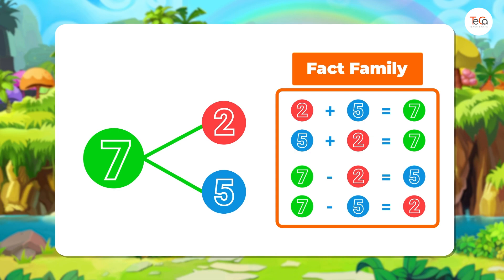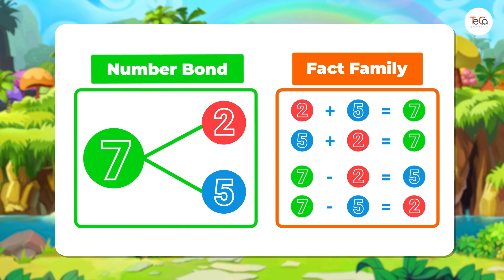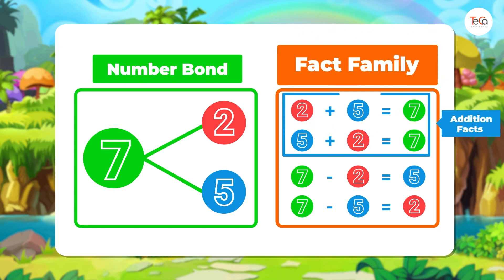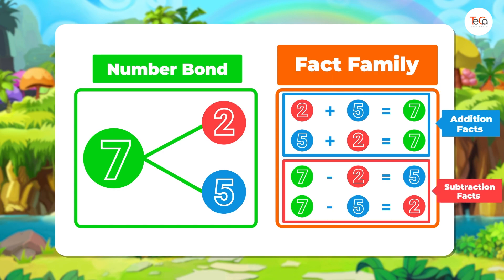So, you see, having this number bond, we can create the fact family that includes 2 addition facts and 2 subtraction facts. Can you see the relation between addition and subtraction here?